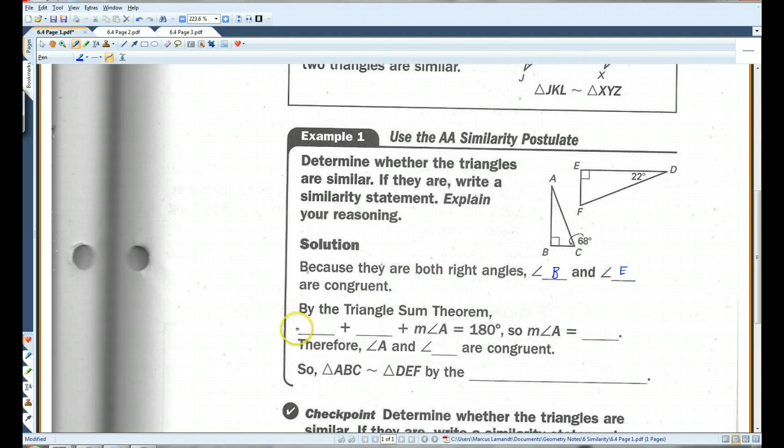By the triangle sum theorem, 68 plus 90 plus the measure of angle A has to be 180 degrees, so the measure of angle A is 22 degrees. Therefore, angle A and angle D are congruent.